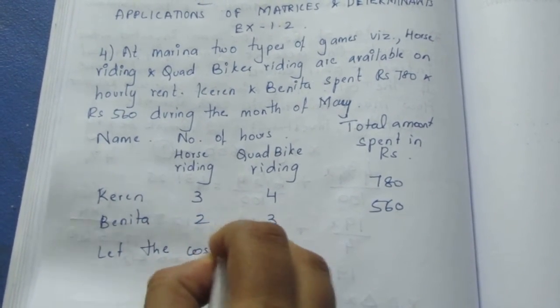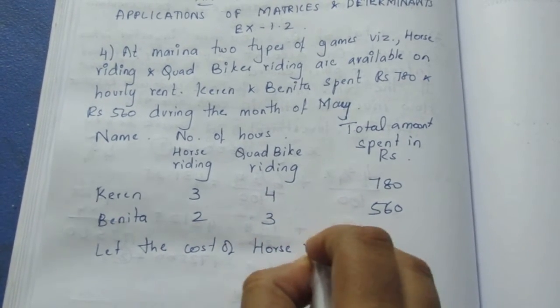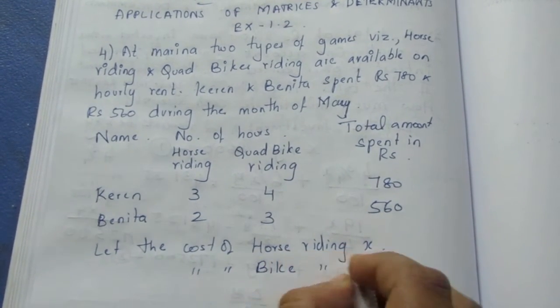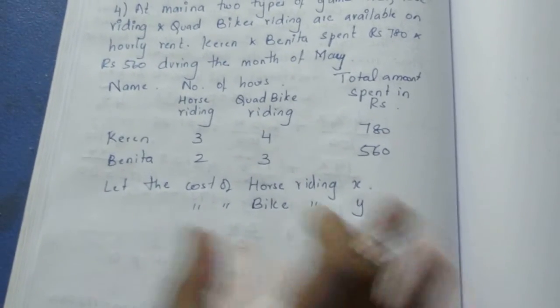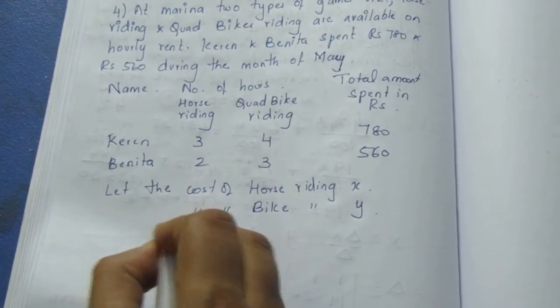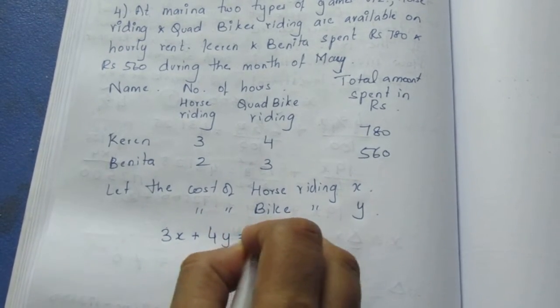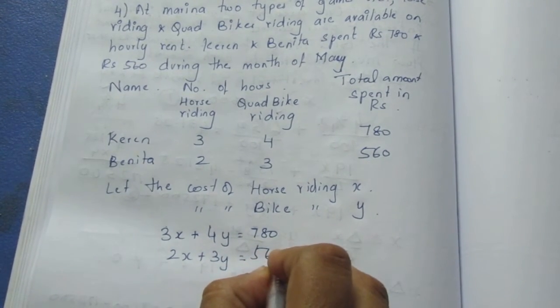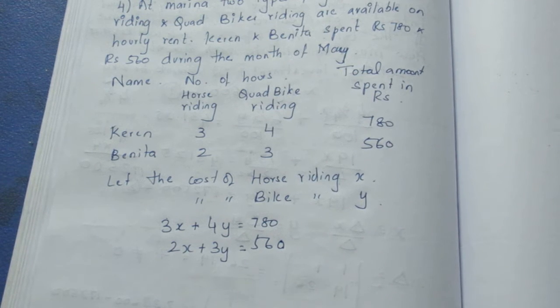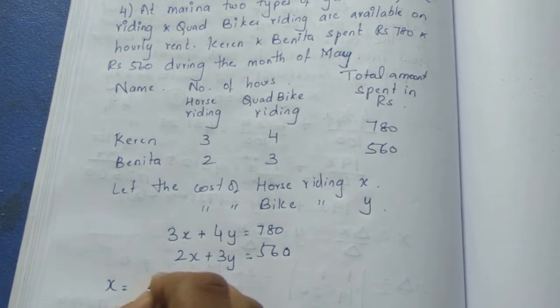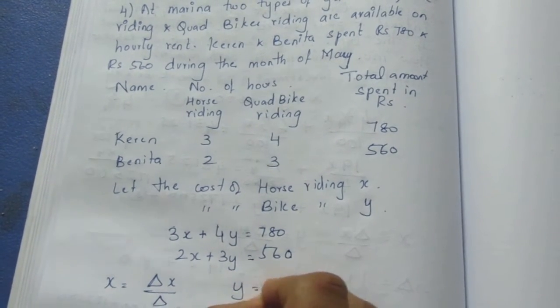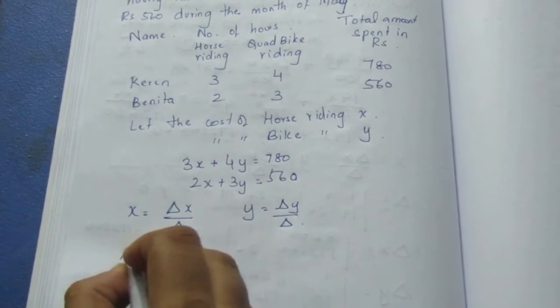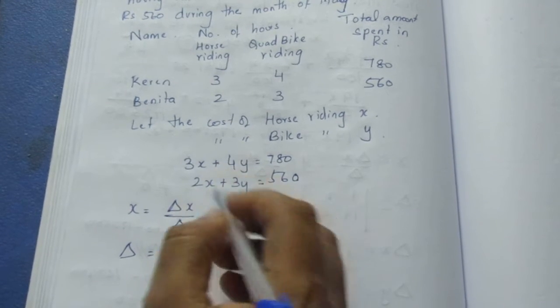Let the cost of Horse Riding be x and the cost of Bike Riding be y. We can set up equations using the given information and solve using determinants with variables x and y.